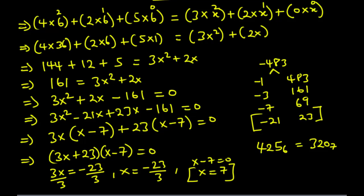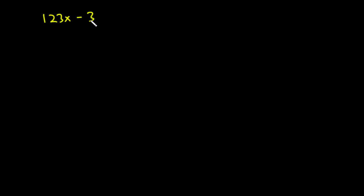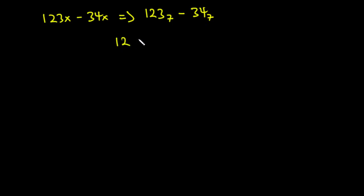Now we are supposed to evaluate 123 base x minus 34 base x. Substituting x equals 7, that becomes 123 base 7 minus 34 base 7. We can represent this in column subtraction form.